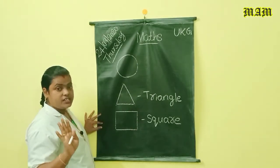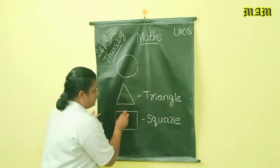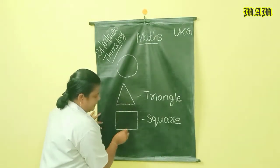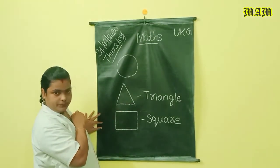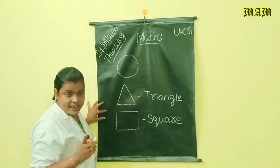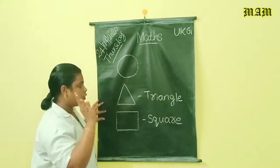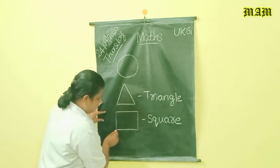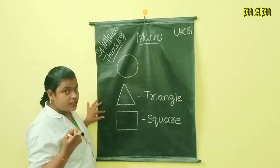Square has four equal sides. One, two, three, four. And square has four corners. One, two, three, four.